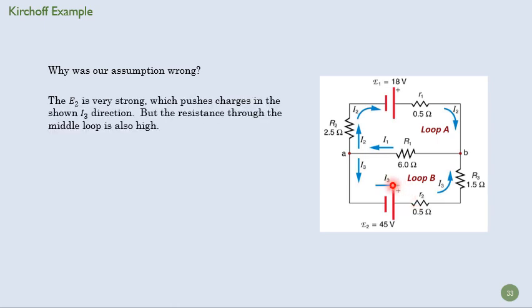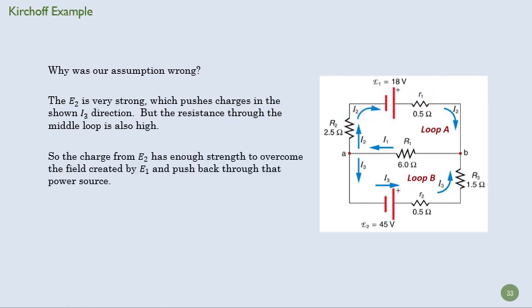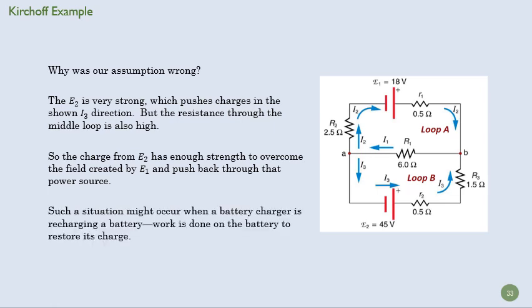So why was our assumption wrong? Well, just because E2 is very strong. The resistance here is also strong. So you're pushing a bunch of current this way. It doesn't all want to go that way because you've got a larger resistance here. And so some of it is going to push back through the battery here.